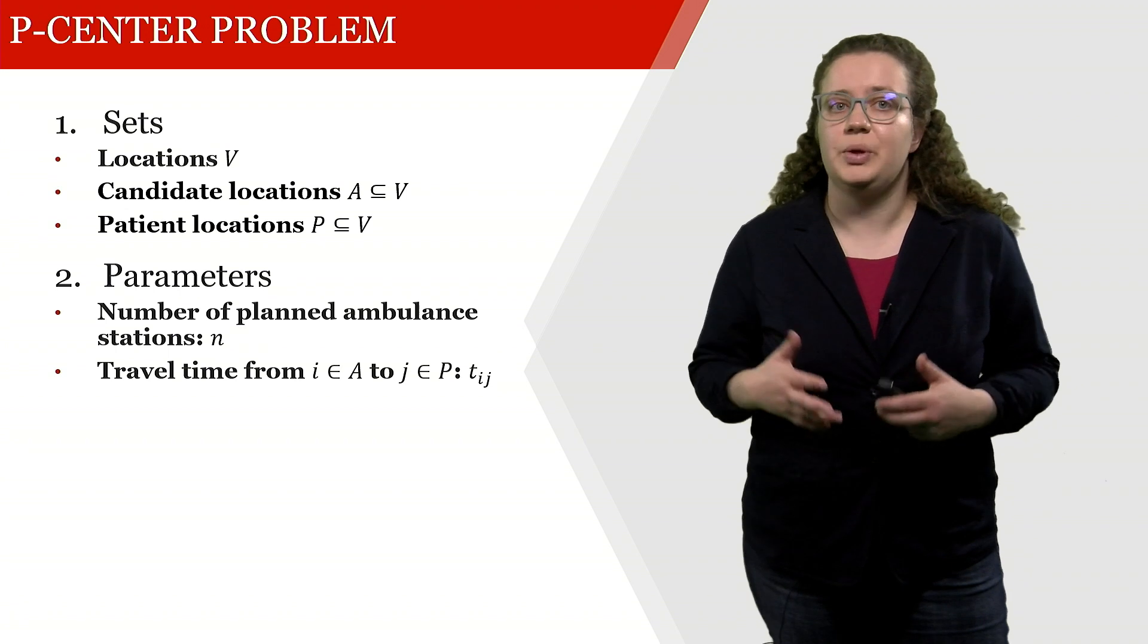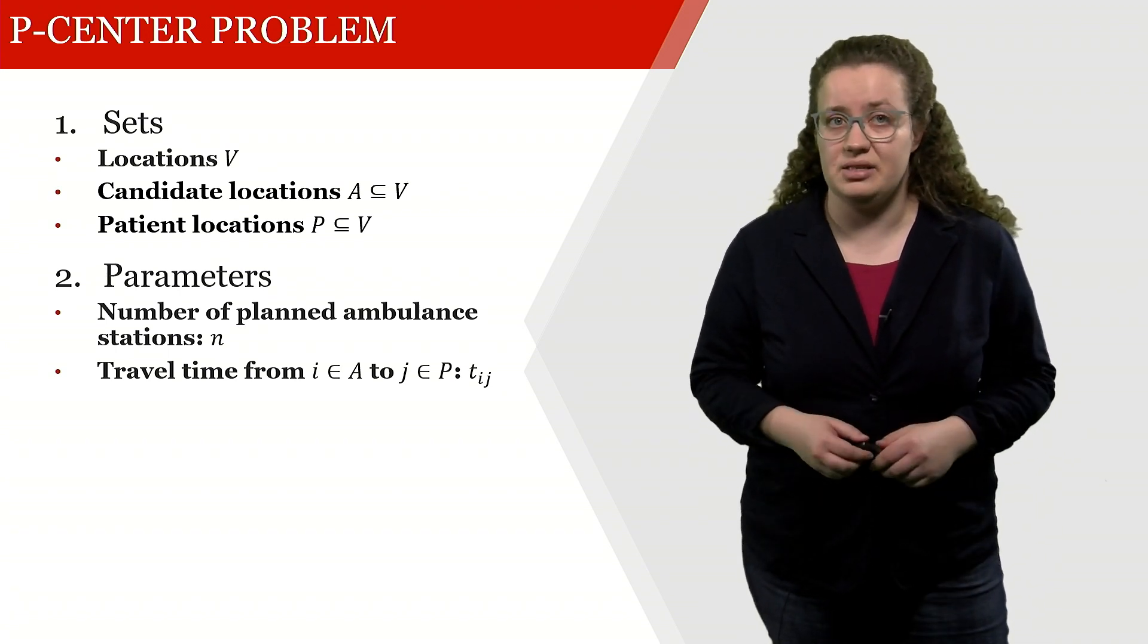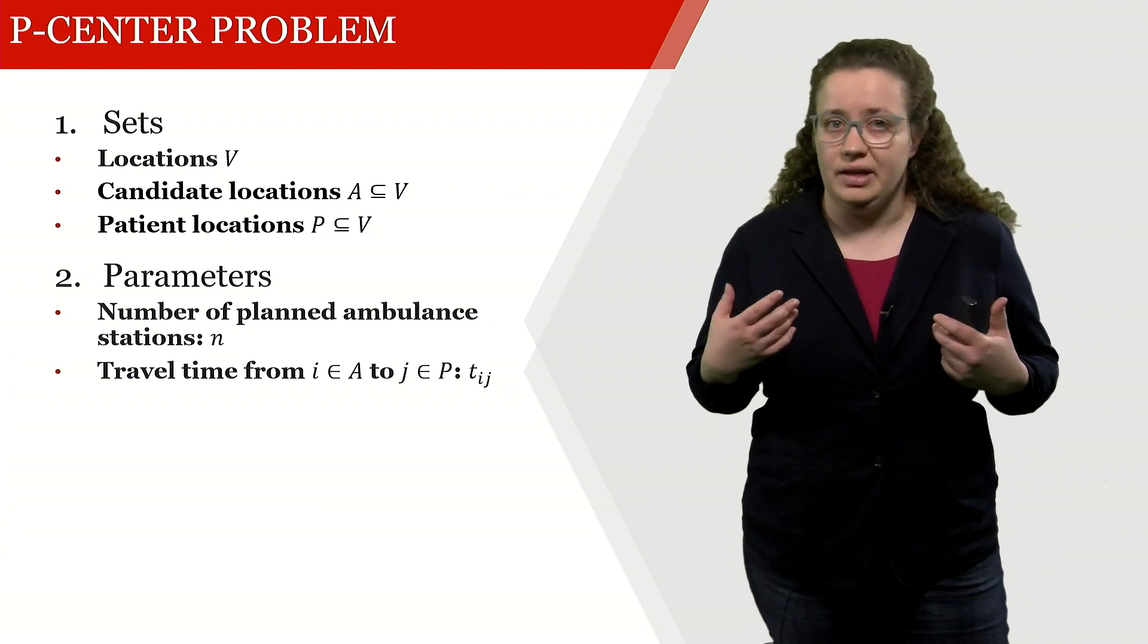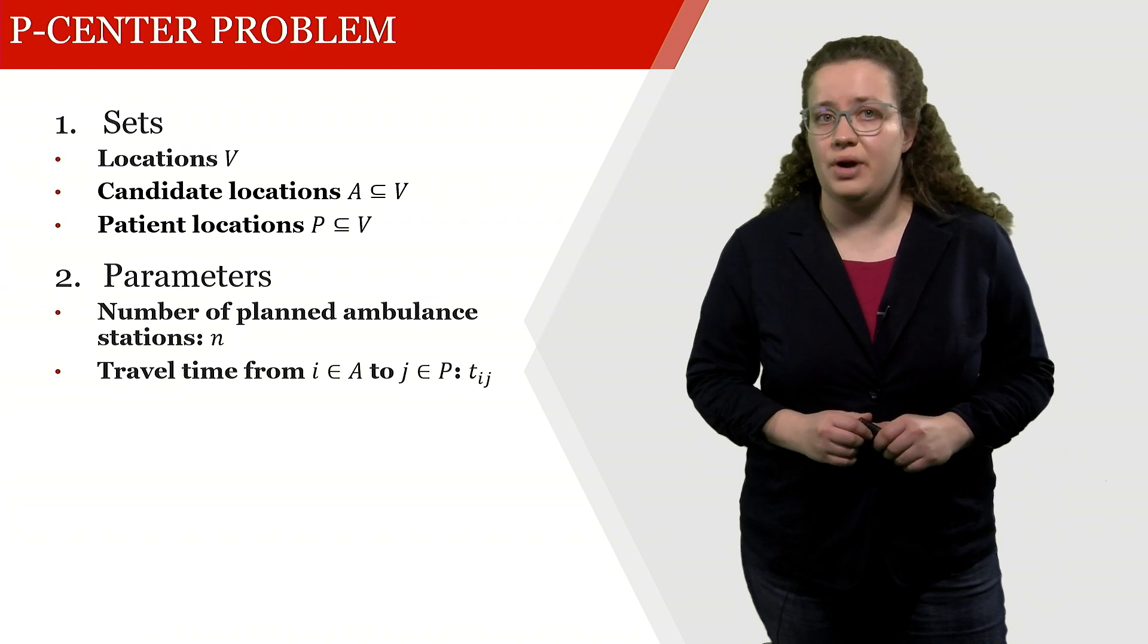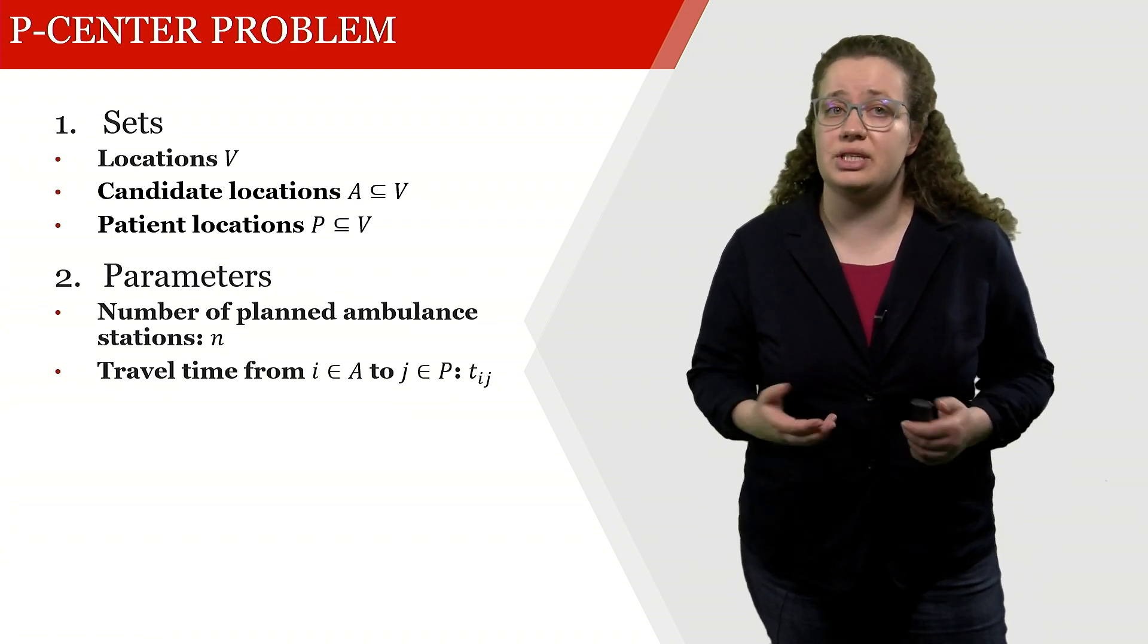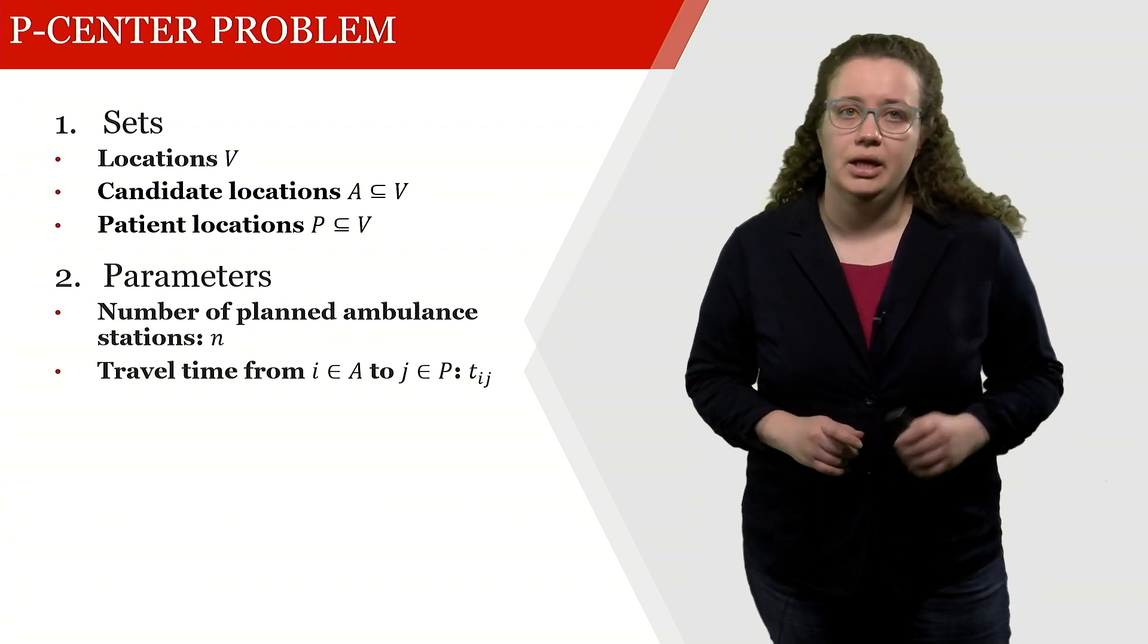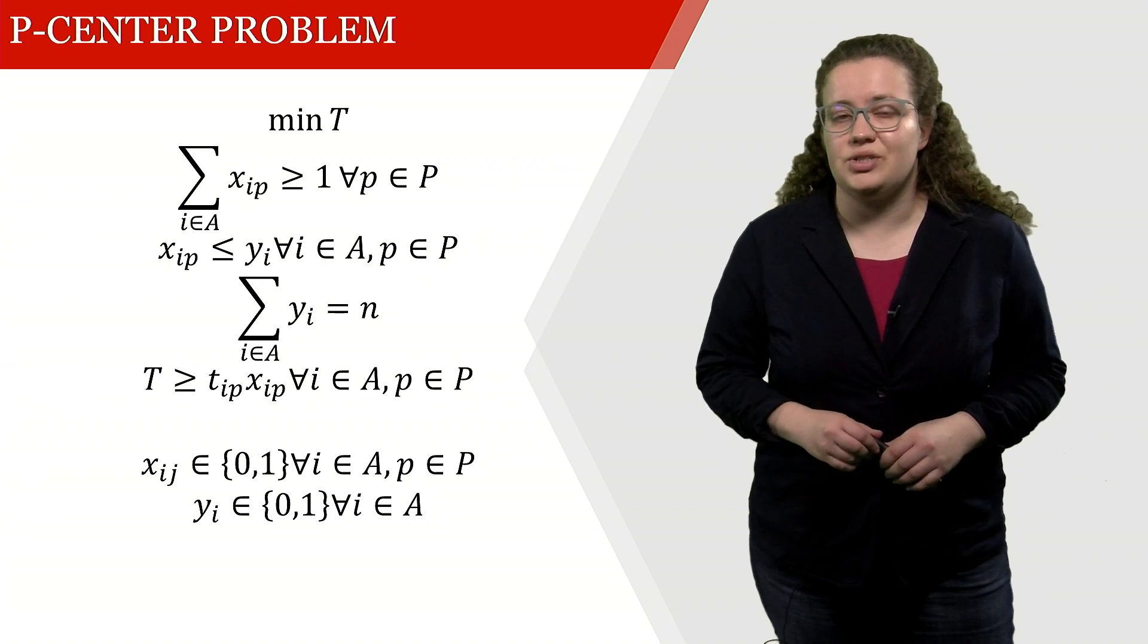So first of all what we're actually given still is the sets and the parameters. So we're having locations which comprise candidate locations and patient locations and we have parameters which is the number of planned ambulance stations and we're also given the travel time. We're also given this mathematical model and this is now what we're trying to understand.